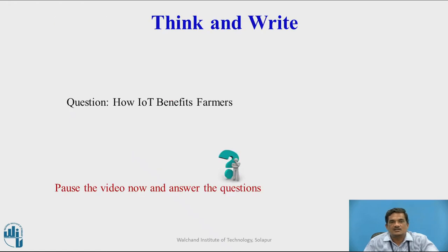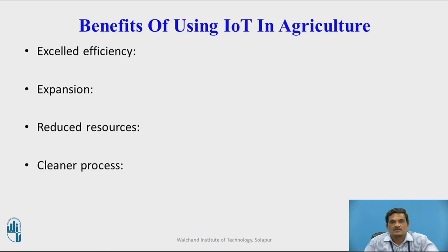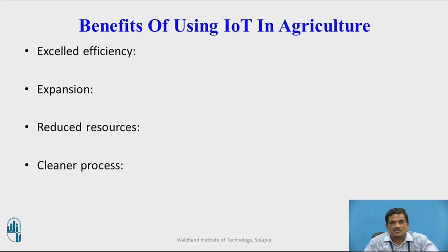Think and write an answer to the question: How does IoT benefit farmers? These are the benefits of IoT in agriculture. It excels efficiency because of the application of IoT or smart farming, so they can improve their product quality and be more responsive to changes in environmental conditions, acting immediately in managing pest management, water management, or other remedial actions.